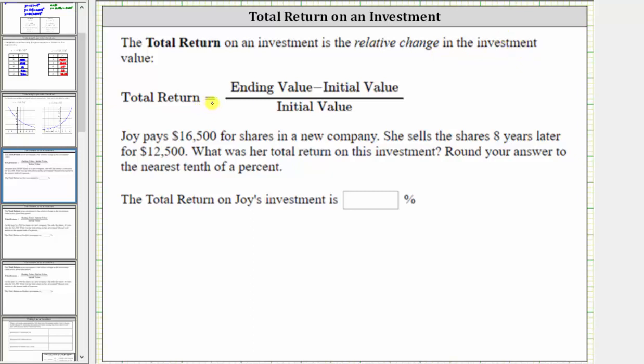The total return is equal to the difference of the ending value and initial value divided by the initial value.